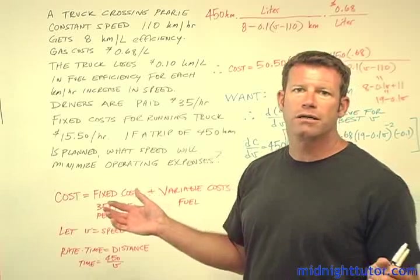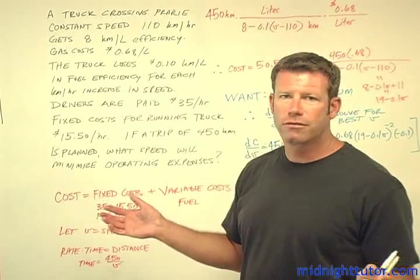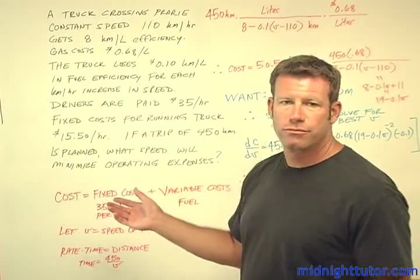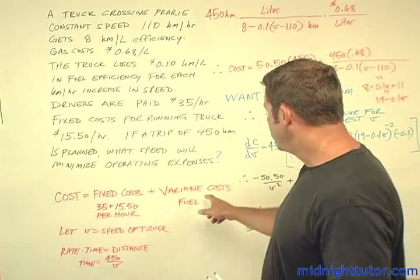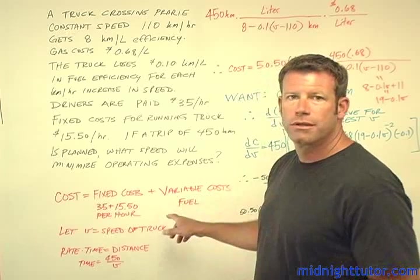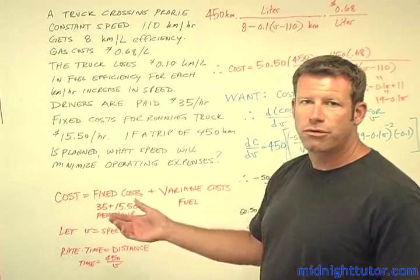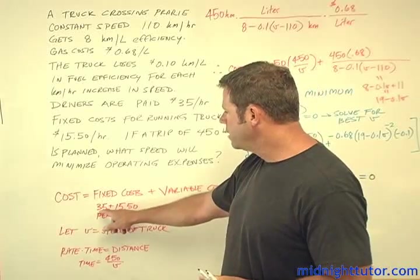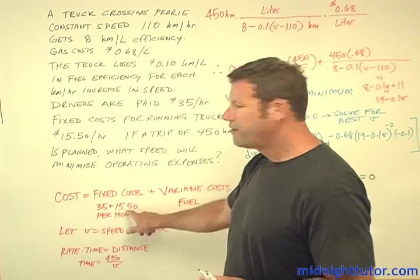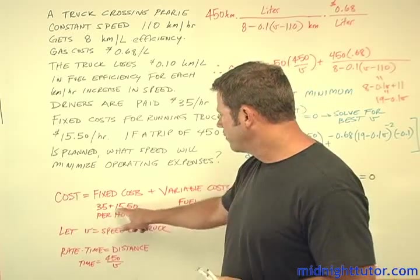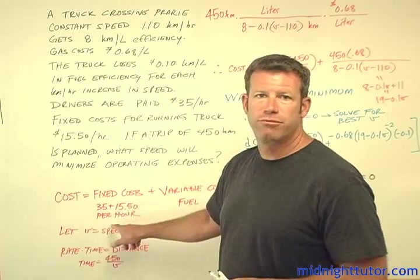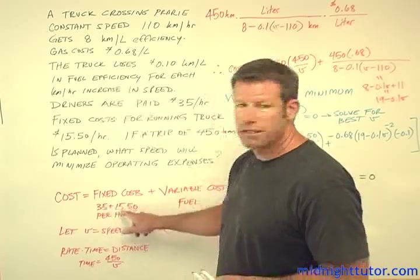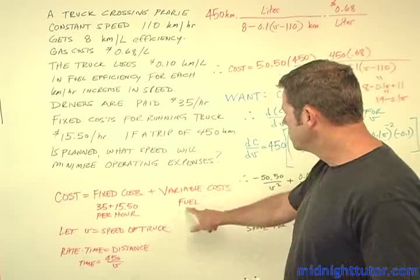Typically people analyze cost based on two different categories: fixed costs, which are things that are there pretty much whatever happens, and variable costs, which are affected by some particular changing parameter. In this case, fixed costs — you could consider the driver's wages and also the operating expenses — give a total of $35 plus $15.50, so $50.50 per hour. For every hour, that's one cost.